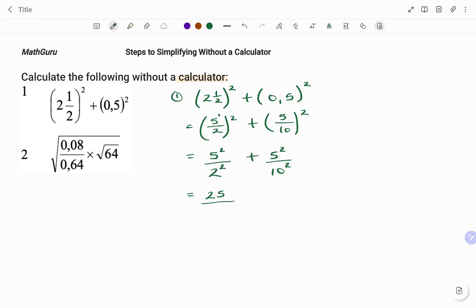divided by 2 to the power of 2, that's 2 times 2, which is 4. Plus, on my right-hand side, 5 squared, which is still 25, divided by 10 squared, that's 10 times 10, 100.